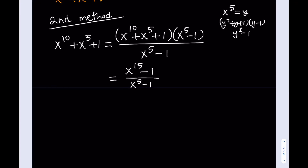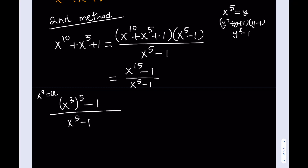Since 15 equals 3 times 5, we can write x to the 15th minus 1 as a difference of two 5th powers, or as a difference of two cubes. Setting u equal to x cubed, we get u to the 5th minus 1 divided by u minus 1, which factors as (u to the 4th plus u cubed plus u squared plus u plus 1). Substituting back, with u equals x cubed, we get x to the 12th plus x to the 9th plus x to the 6th plus x cubed plus 1.